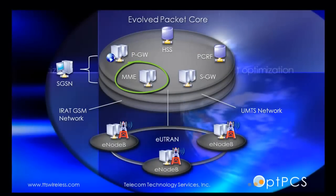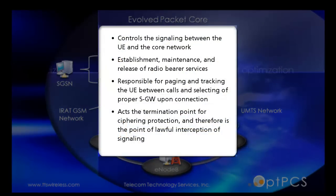Mobility Management Entity (MME) – This controls the signaling between the UE and the Core Network. It handles the establishment, maintenance, and release of radio-bearer services. It is also responsible for paging and tracking the UE between calls and selecting the proper SGW upon connection. It acts as the termination point for ciphering protection and is therefore the point of lawful interception of signaling.